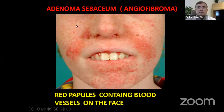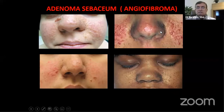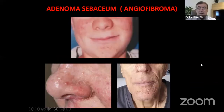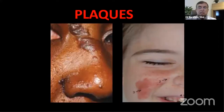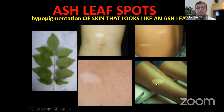Adenoma sebaceum — which is actually angiofibroma — presents as red papules containing blood vessels on the face. Various manifestations of angiofibromas appear in children and in adults who are lucky enough to reach that age, sometimes presenting not as papules but as plaques. Importantly, hypopigmentation in the form of ash leaf spots is equally significant as a diagnostic finding.